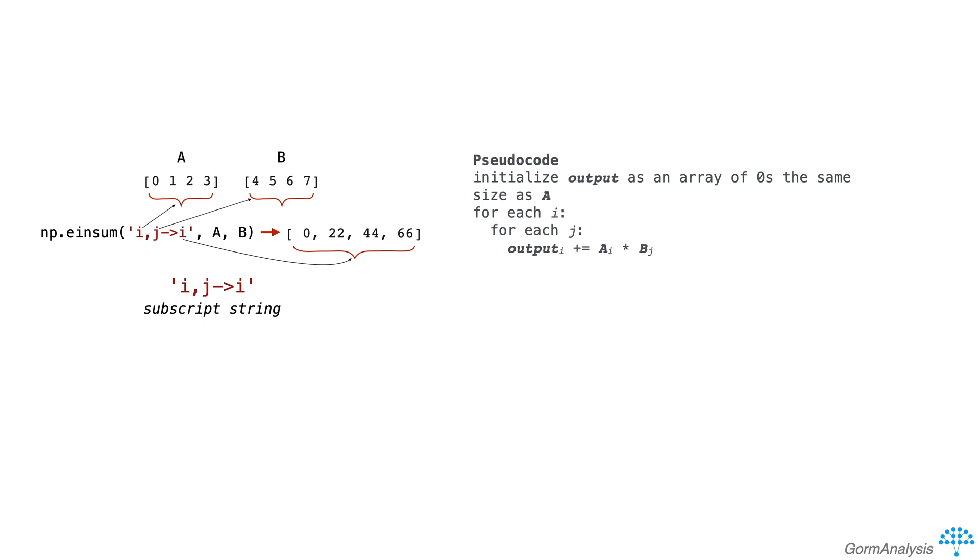Let's see some more examples, and I think things will start to soak in. If we do einsum('i,j->', a, b), we get back 132.